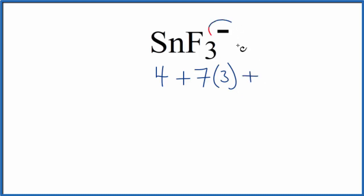Plus this negative sign up here, that means we have an extra negative charge. That's an extra electron. We need to add that as well. So 4 plus 21 plus 1, that gives us 26 total valence electrons for SnF3-.